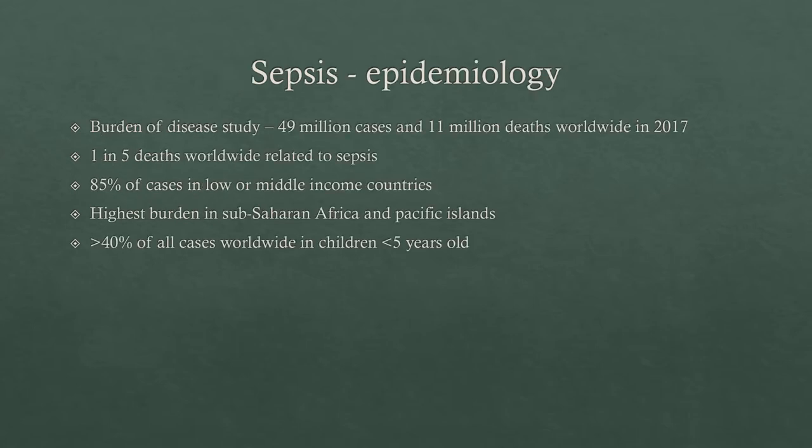In terms of sepsis epidemiology, sepsis has a really high burden of disease. There are around 49 million cases and 11 million deaths worldwide — this was from a big study done in 2017. One in five deaths worldwide are related to sepsis. Obviously a huge percentage of this is in low and middle income countries. There's a really big burden in sub-Saharan Africa, but also in the Pacific Islands, which are essentially our neighbours. Greater than 40% of all cases worldwide are in children less than five.